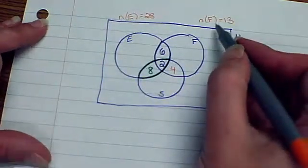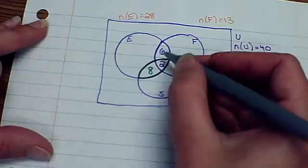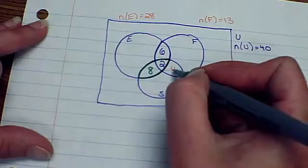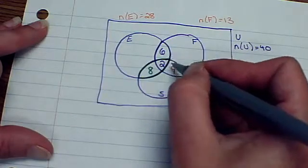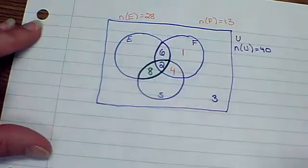So now let's think about that. If the total number of French students is thirteen, how many have we already accounted for? Six, four, and two. So if I add that up, that's twelve. That means there's only one other student left here.